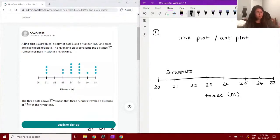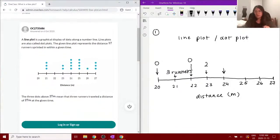At the 21-meter mark, there are three runners. There's zero runners at the 22-meter mark because there are no dots. There are two runners at the 23-meter mark. I'm just referring to the diagram and how many dots we see.